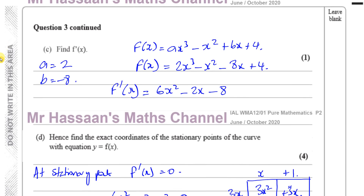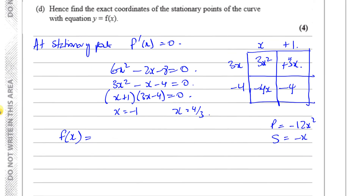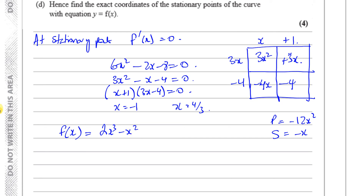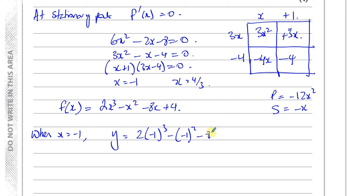Now we find the y values. With f(x) equals 2x cubed minus x squared minus 8x plus 4, when x equals minus 1: y equals 2 times minus 1 cubed, minus minus 1 squared, minus 8 times minus 1, plus 4 — that gives minus 2, minus 1, plus 8, plus 4, which equals 9. So one stationary point is at (minus 1, 9).